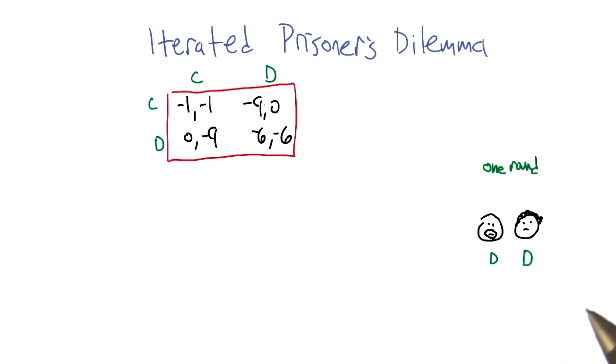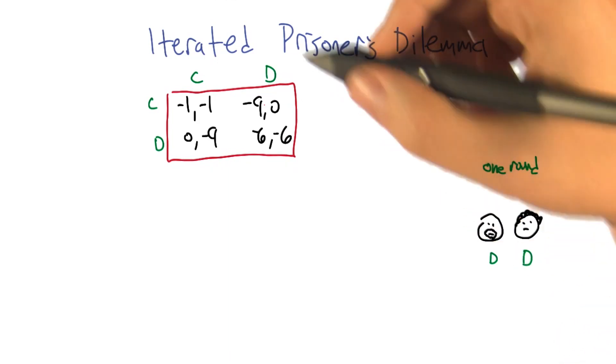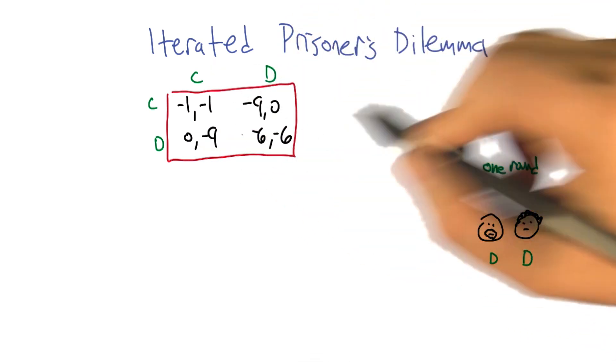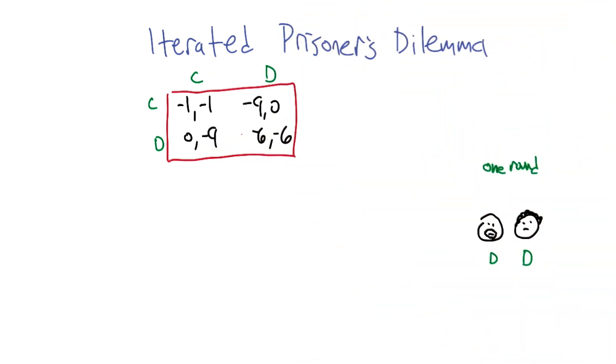Let me take you back to what we were talking about last time. We were talking about the iterated prisoner's dilemma. And here's the prisoner's dilemma payoffs that you wrote down for us. Do you remember this? I vaguely remember this.